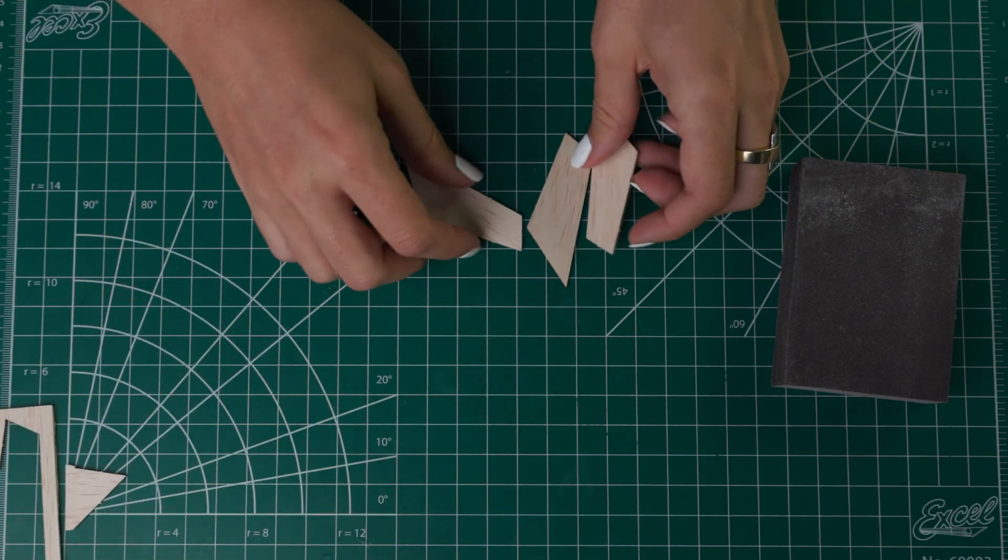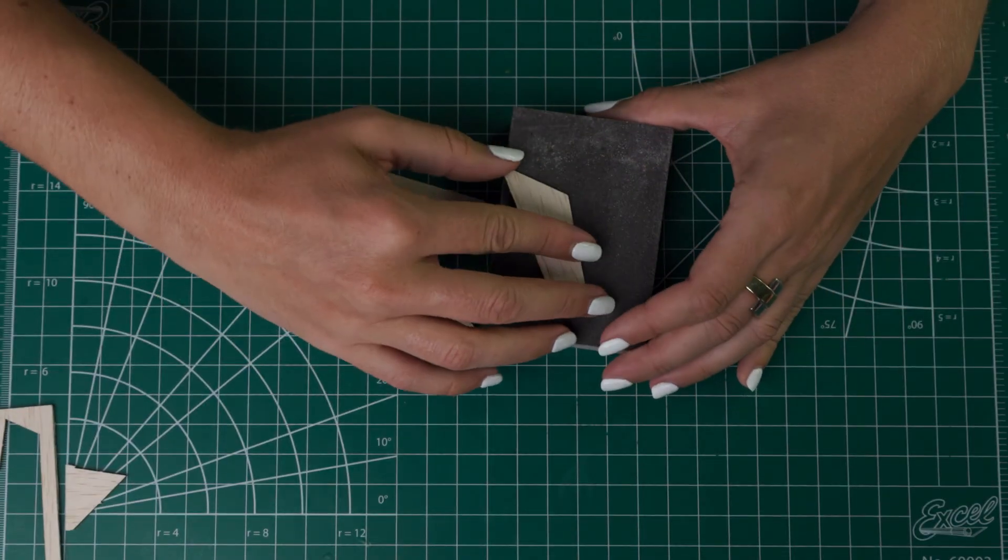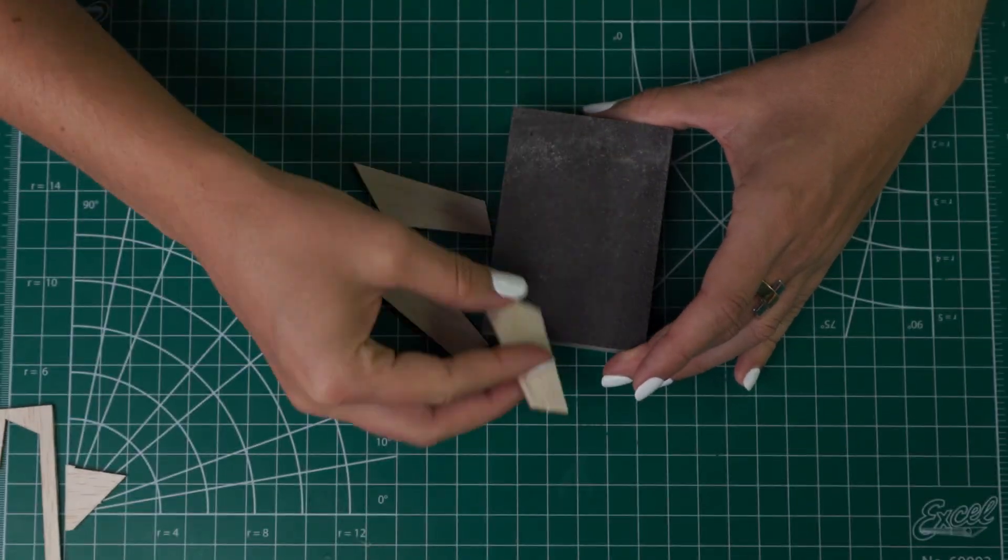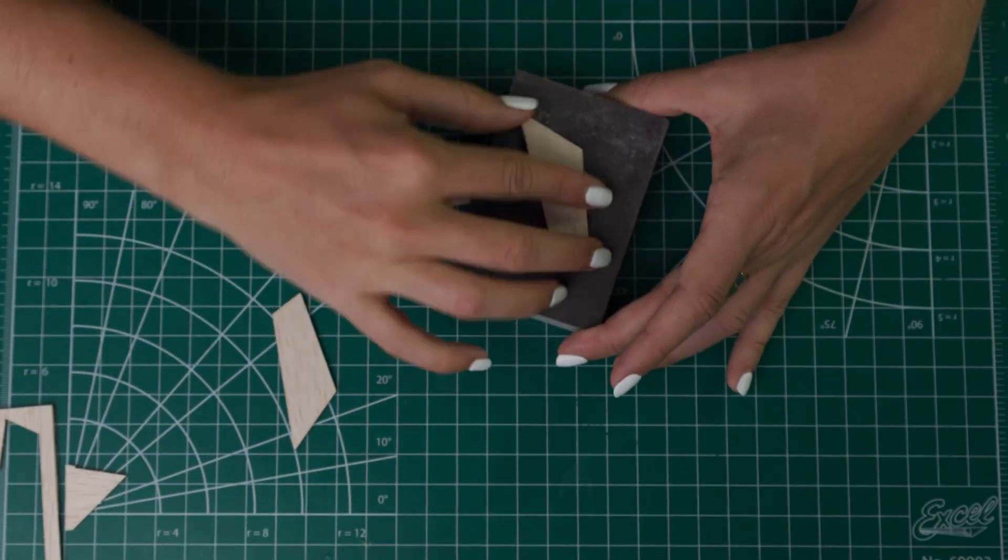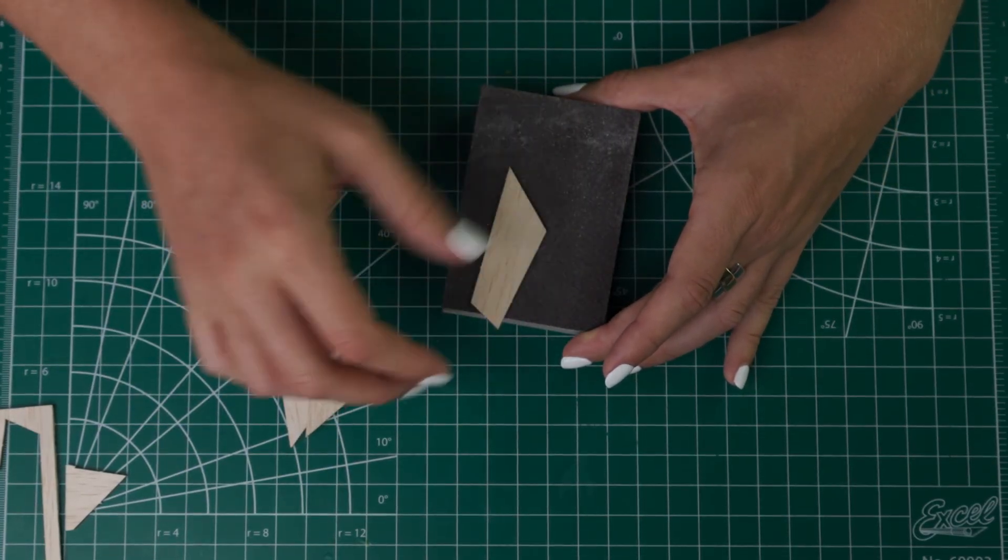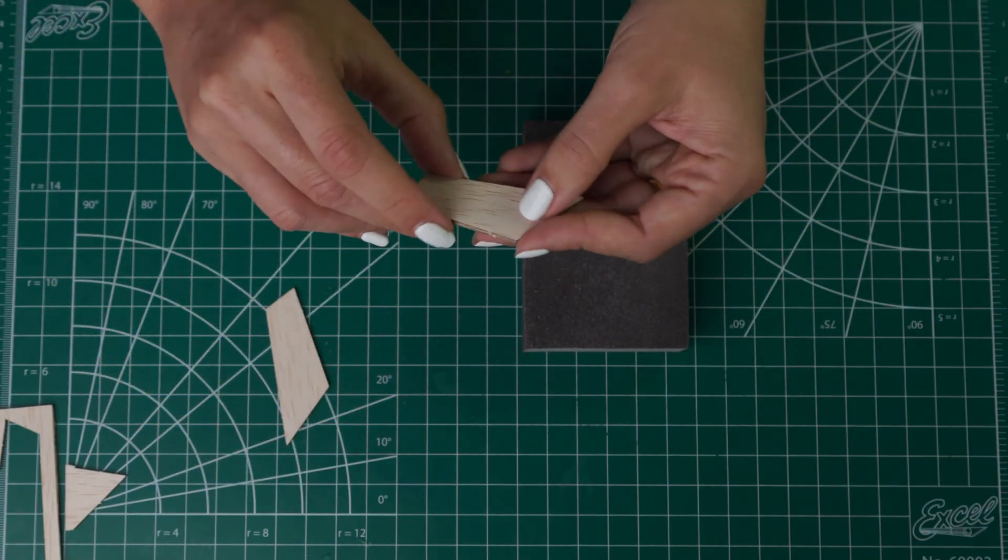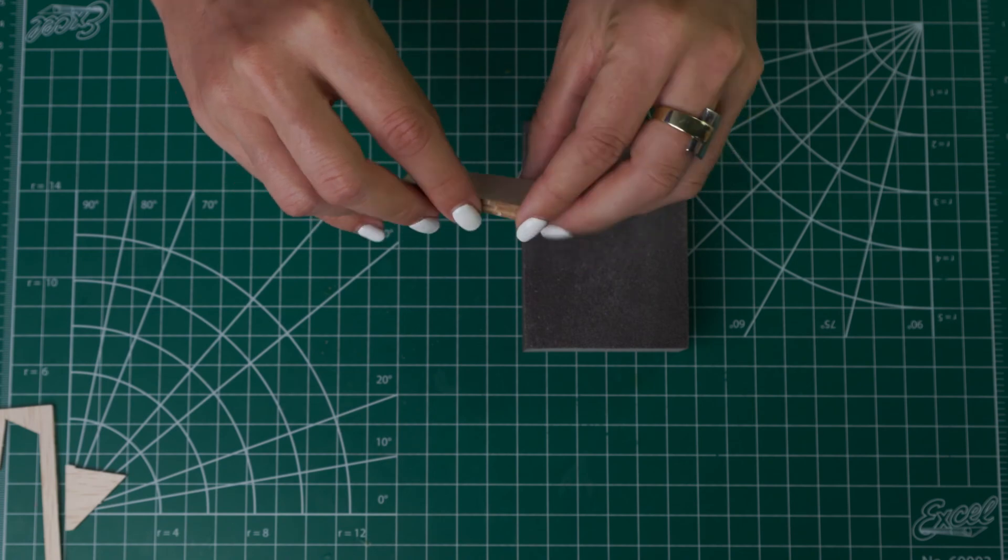So now we're going to sand them. I'm going to do mine individually first like this. Next up we want to sand the edges so you can put them together and do that all at once so they're nice and even.